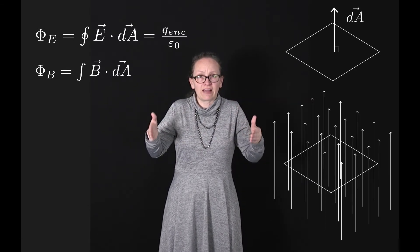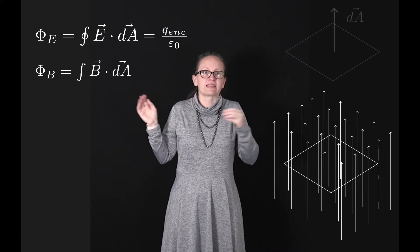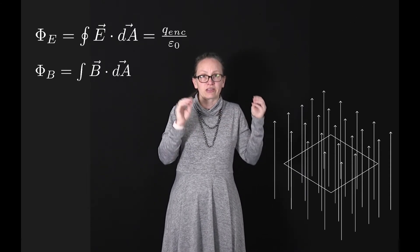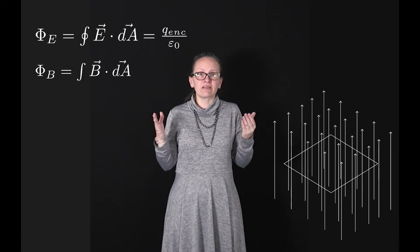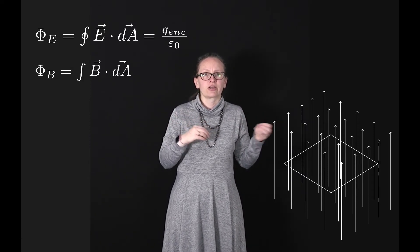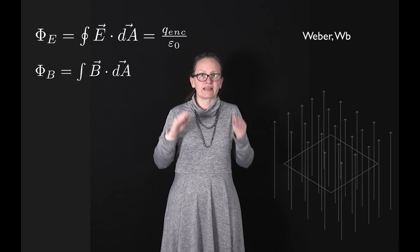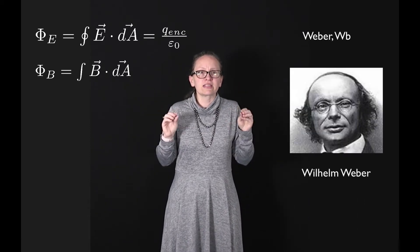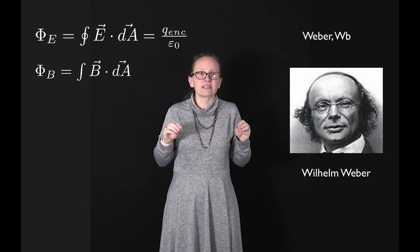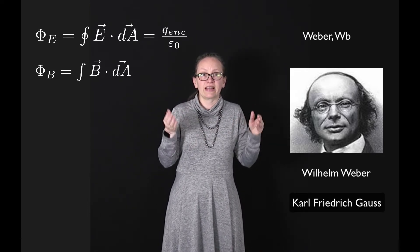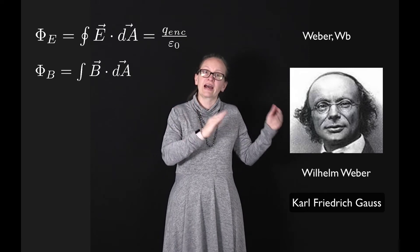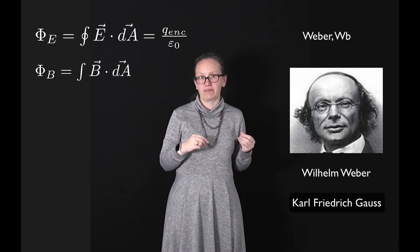Now with magnetic flux, we can also picture this as the number of field lines that are cutting through a surface, just as in the electric field case. Magnetic flux actually has its own units, known as the Weber, which are written as a capital W and then a B. These units are named after the German physicist Wilhelm Weber, who invented the electromagnetic telegraph along with Carl Friedrich Gauss, whose name should also be familiar to you.